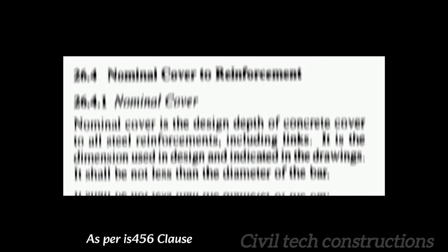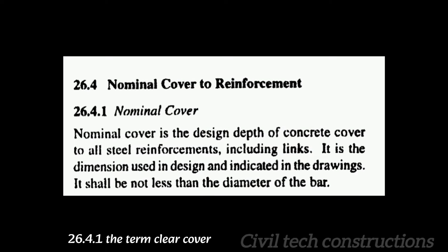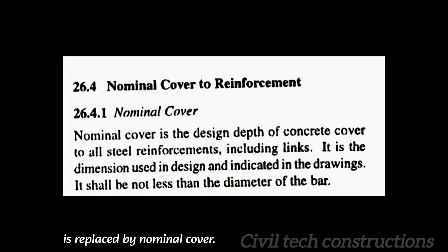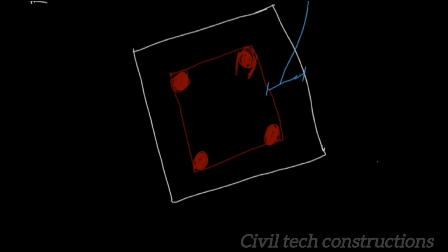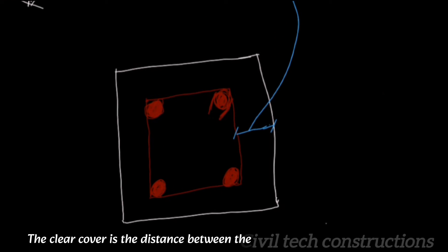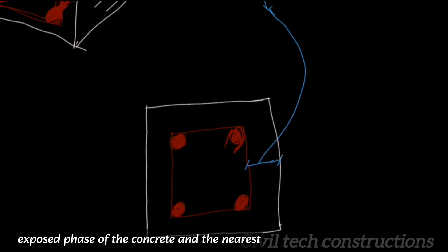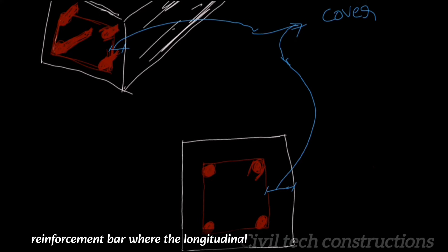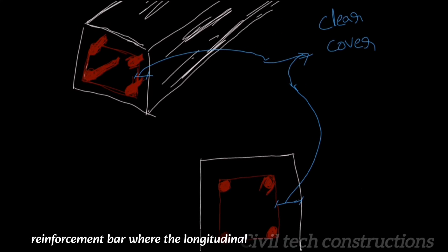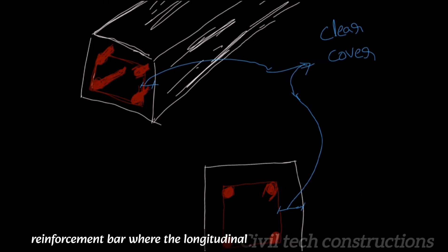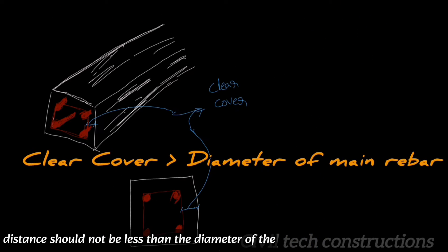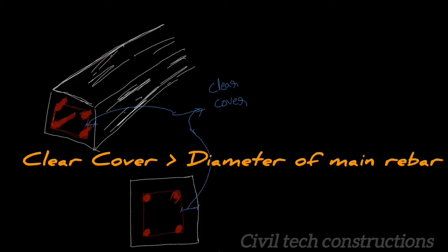As per IS-456 clause 26.4.1, the term clear cover is replaced by nominal cover. The clear cover is the distance between the exposed face of the concrete and the nearest reinforcement bar, whether longitudinal, lateral, or shear. This distance should not be less than the diameter of the main reinforcement.